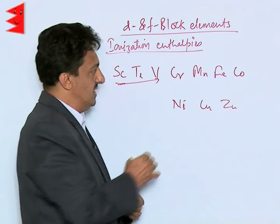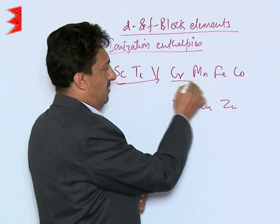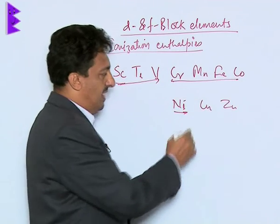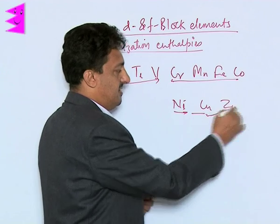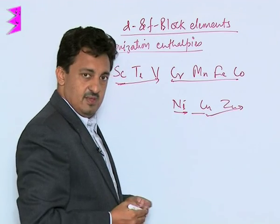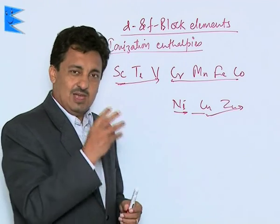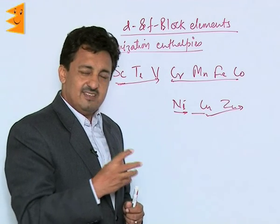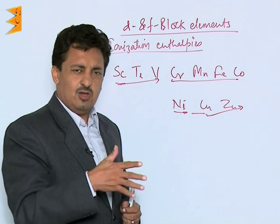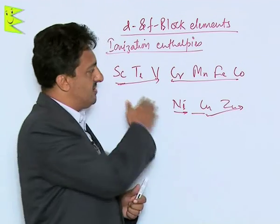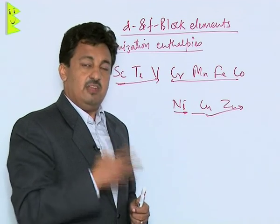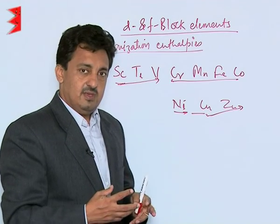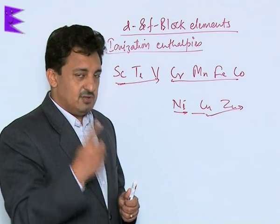From chromium to almost nickel, the ionization enthalpy remains almost the same, and from copper onwards it increases again. However, if we look at the values closely, the trend is not very regular — although it is generally increasing across the series, it appears irregular when examined manually.